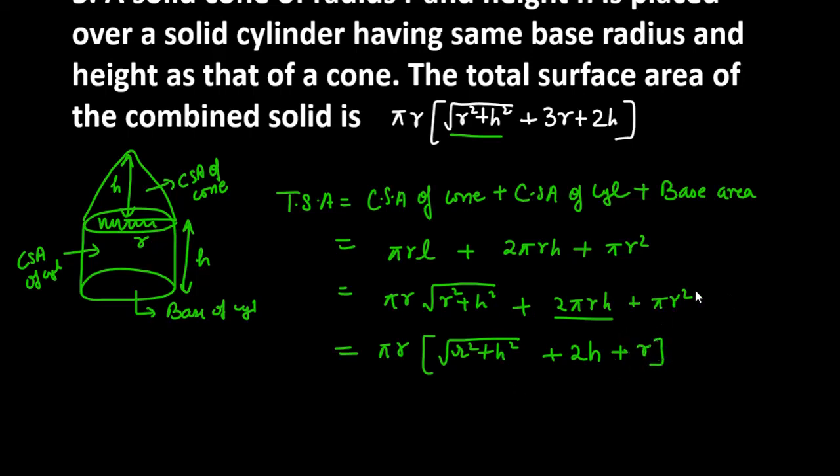तो आप देख सकते हो, कि जो आपकी statement है, ये वाली और given वाली, उसमें difference नजर आ रहा. 2h है, और under root r square plus h square है, but 3r नहीं है, it is r only.